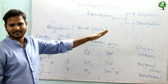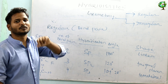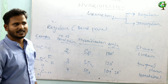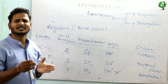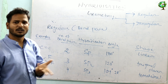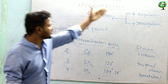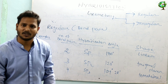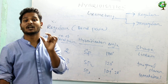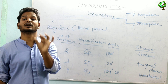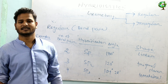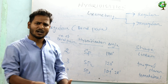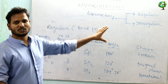Hybridization predicts geometry by taking into account the repulsions between bond pairs and lone pairs, and that is based on the VSEPR theory. Every molecule possesses either regular geometry or irregular geometry. Regular geometry means the molecule contains only bond pairs. Irregular geometry means it contains bond pairs and lone pairs. Now we discuss regular geometry.